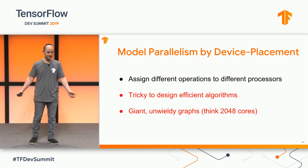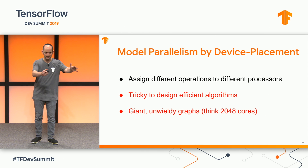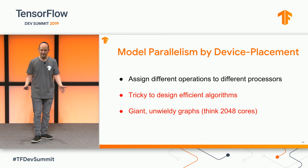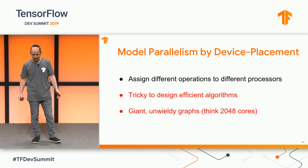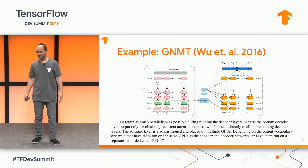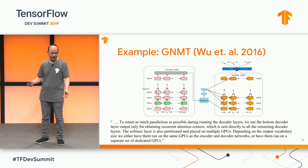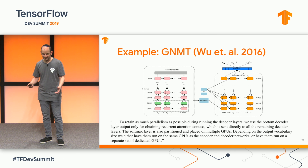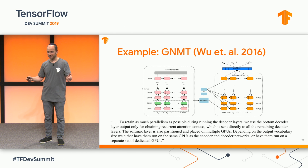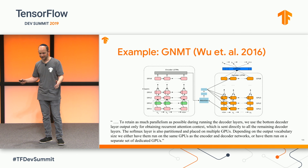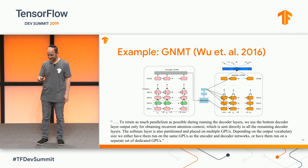How do people tend to do it now? Well, you use device placement — you say this operation goes on this device, this operation goes on that device. TensorFlow makes it easy to do that. Still, it's tricky to design an efficient algorithm, and you end up with a giant graph if you're generating enough operations to go on 2,000 different cores. Here's an example from Google Neural Machine Translation: they had eight LSTMs distributed across eight different GPUs, put the softmax layer somewhere else, and used interesting pipelining to keep all the GPUs busy. It works, but it's a lot of work to get right.